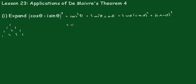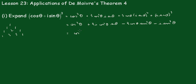Now this becomes cos³θ + 3i cos²θ sinθ - 3cosθ sin²θ - i sin³θ. Grouping into the real and imaginary parts, we get the real part: cos³θ - 3cosθ sin²θ, and the imaginary part: 3cos²θ sinθ - sin³θ.